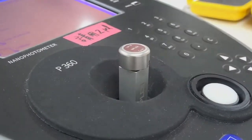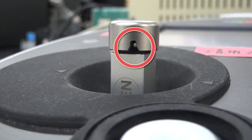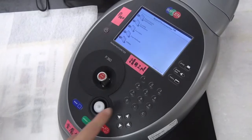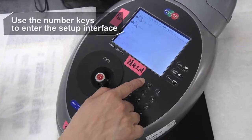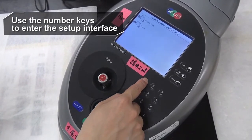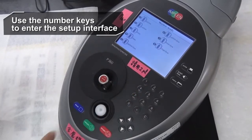7. Put the lid on. Make sure the notch of the lid perfectly sits on the metal bar to form a closed space. 8. Set up the parameters. Navigate the main menu using the number keys to enter the parameter setup interface for the sample type to be measured.